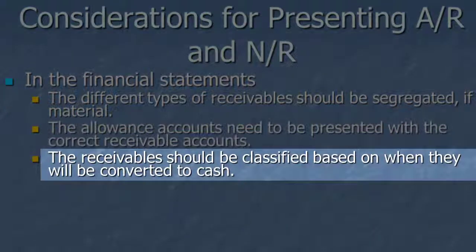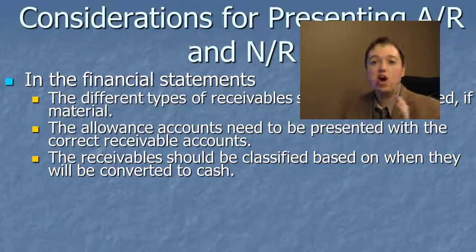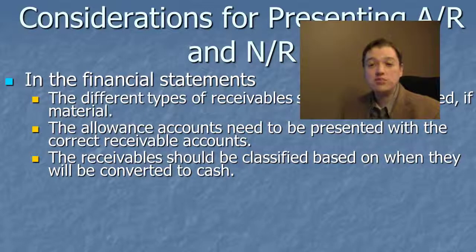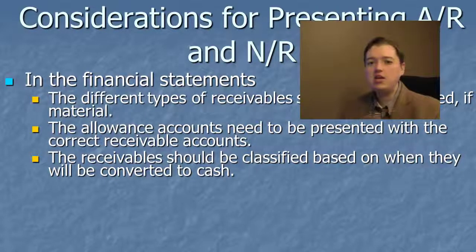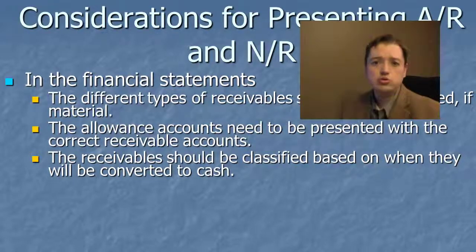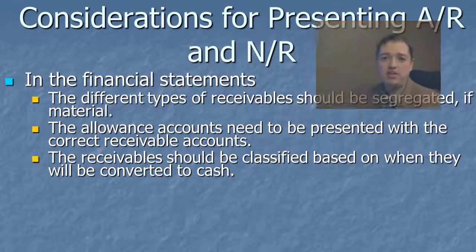Make sure that we classify receivables based on how soon they'll be converted. Current assets are going to be turned into cash within one year or operating cycle. If it's going to take longer than that to collect an accounts receivable or note receivable, then they're not current assets — they're long-term investments and need to be moved into that category. It's not often we see accounts receivable in long-term investments, but notes receivable are frequently included there.